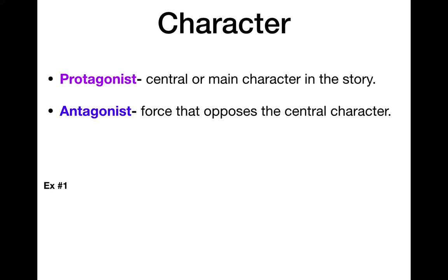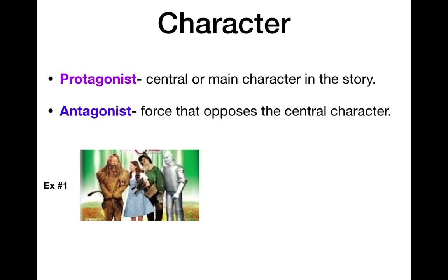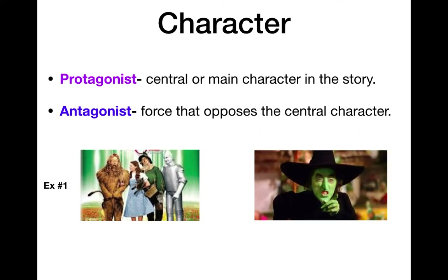Let me give you an example — The Wizard of Oz. Dorothy would be the protagonist. She's the main character. She gets caught in a tornado and ends up in the land of Oz. Can you think of who the evil character is — the force that opposes Dorothy? That's the Wicked Witch of the West. So protagonist equals main character, antagonist equals something against the main character.